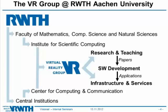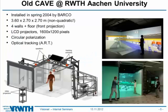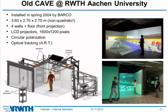First, some words about our old cave. It was installed in spring 2004 by Barco and has a footprint of 3.6 by 2.7 meters at a height of 2.7 meters. It has four back-projected walls and a top-projected floor, driven by projectors with a resolution of 1600 by 1200 pixels each. For 3D viewing we use circular polarization, and the tracking system is an optical tracking system by ART.